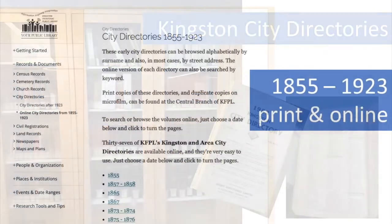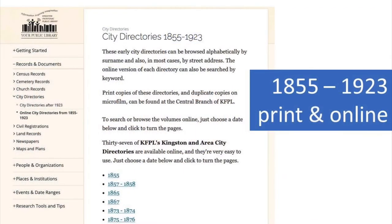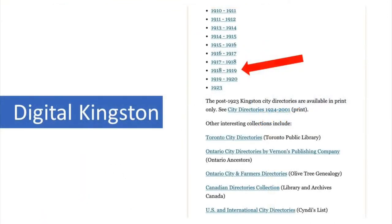The earliest city directories are available both in print and online. The later ones haven't yet been digitized. It's easy to access the online ones from the Digital Kingston website. Just scroll down and click a date to open the relevant directory, and the book will open on your screen.